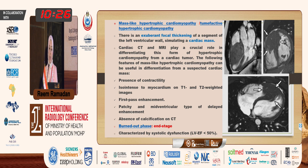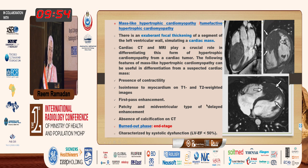The last type is the mass-like HCM, also termed effective HCM. There is exuberant focal thickening of a segment of the LV wall simulating a cardiac mass, and differentiating it from a cardiac tumor is challenging. We look for contractility — if it contracts with the myocardium during systole and diastole — if it is iso-intense to the myocardium on T1 and T2, presence of first-pass enhancement, and patchy mid-ventricular type of delayed enhancement. These all favor HCM, along with absence of calcification on CT.